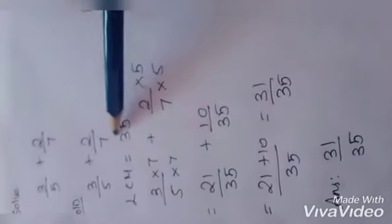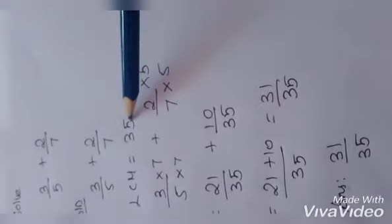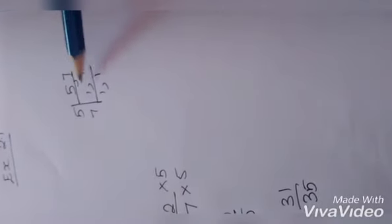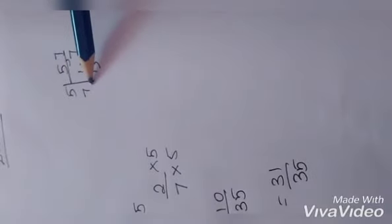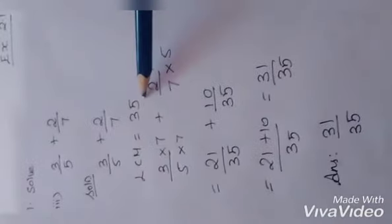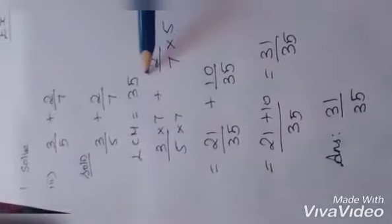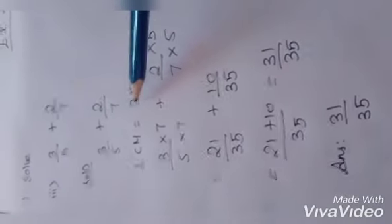Here also the denominators are different — it is 5 and 7. So I have to take the LCM. In the 5 table: 5 ones are 5, and 7 won't come in the 5 table, so I write 7. Both 5 and 7 are prime numbers, so the LCM is 5 multiplied by 7, which equals 35.